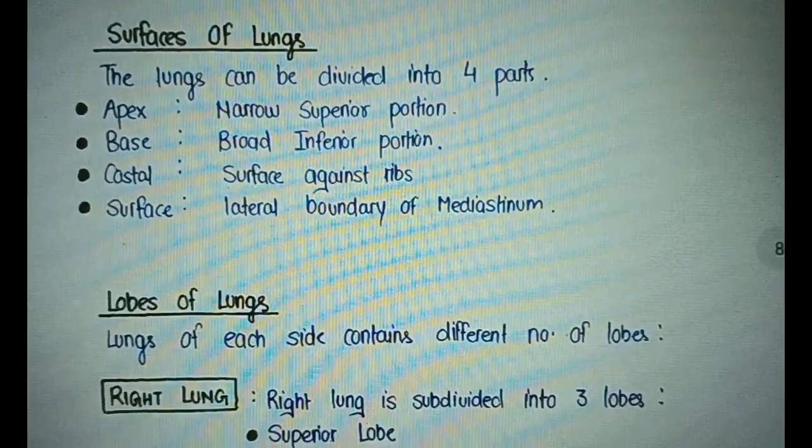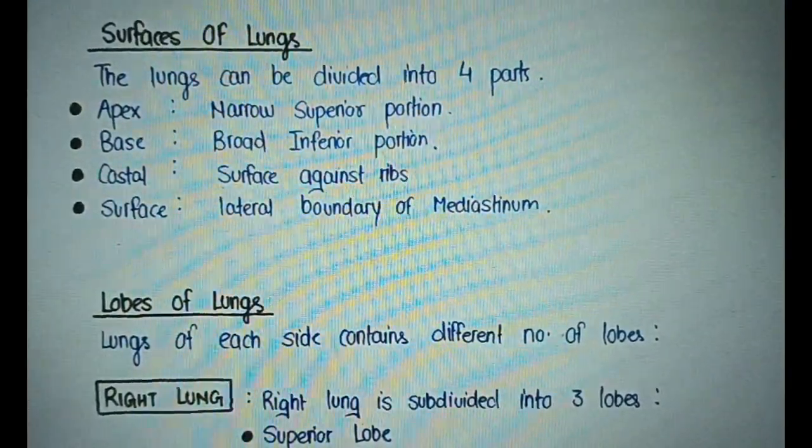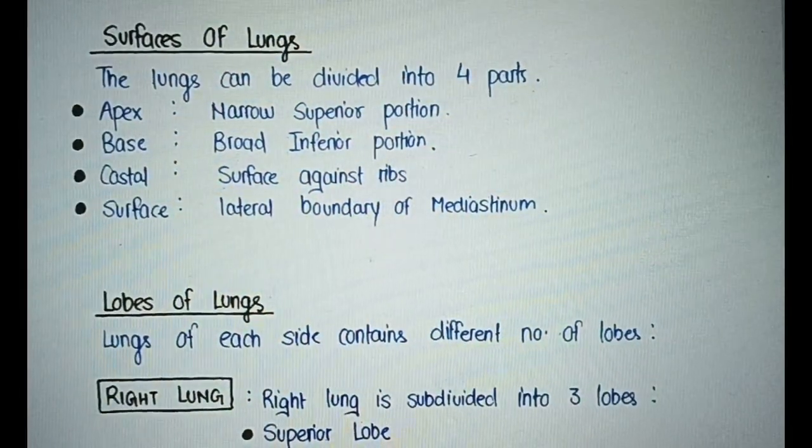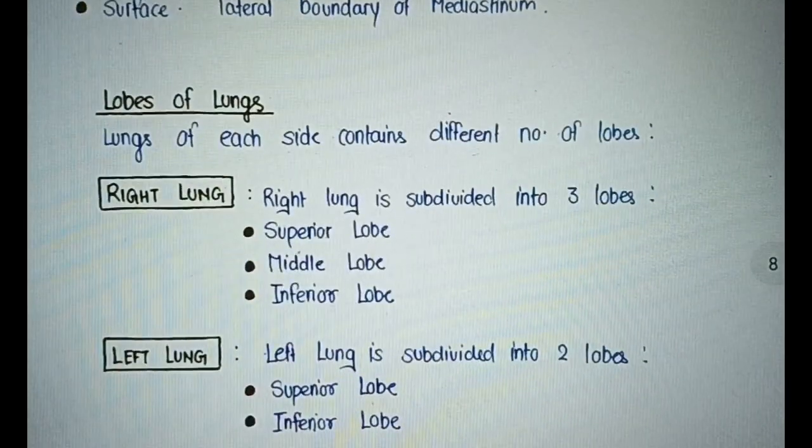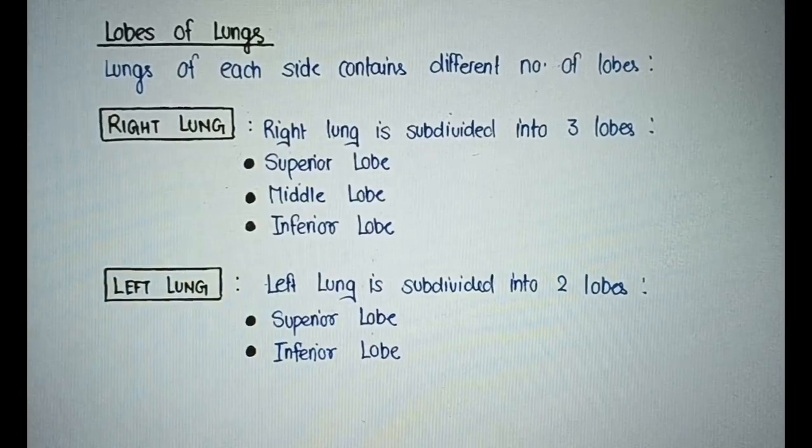Surfaces of lungs. The lungs can be divided into four parts: Apex (narrow superior portion), Base (broad inferior portion), Costal surface (surface against ribs), and Medial surface (lateral boundary of mediastinum).